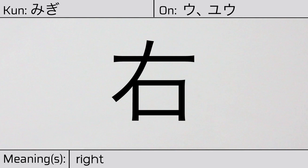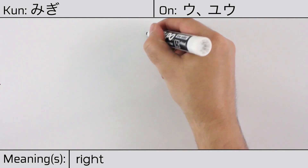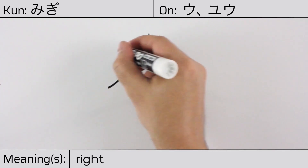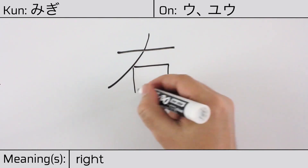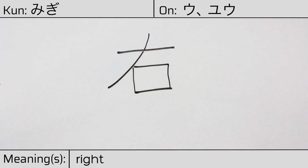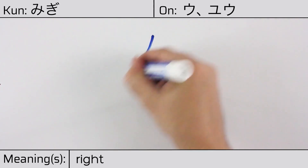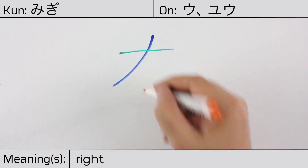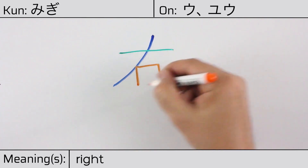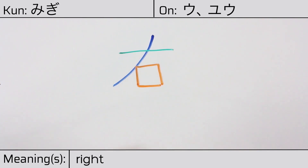Here is the stroke order: ichi, ni, san, shi, go. This character is made up of the following radicals or parts: katakana no, followed by ichi or kanji number one, and mouth or opening, kuchi.